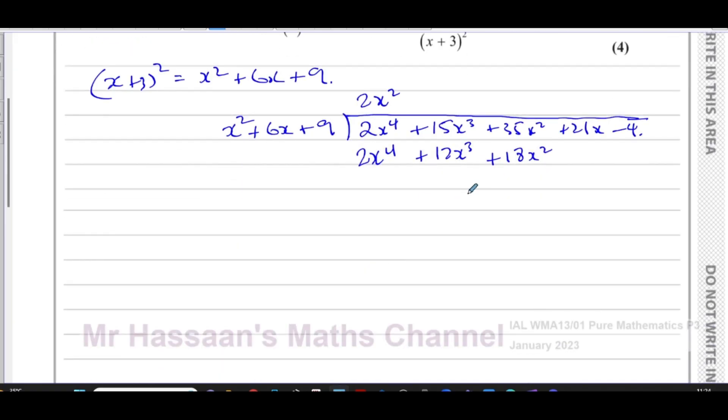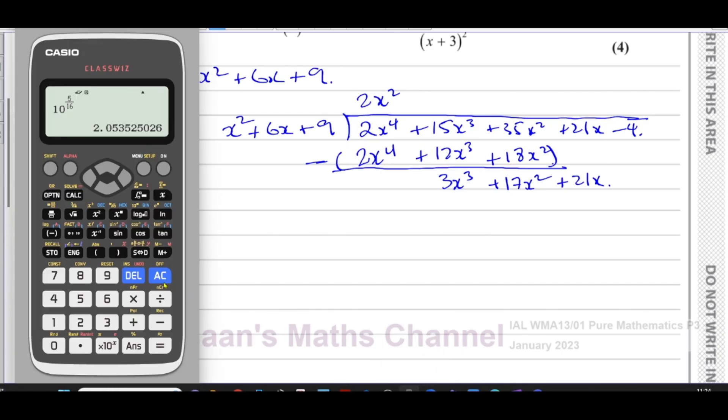Now I'm going to take this line and subtract all of these. This is zero of course. You have 15x cubed minus 12x cubed which is 3x cubed. 35x squared minus 18x squared which is plus 17x squared, and bring down the next term which is plus 21x. Just make sure, 35 minus 18, that gives us 17, that's right.